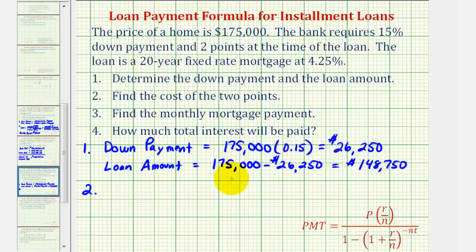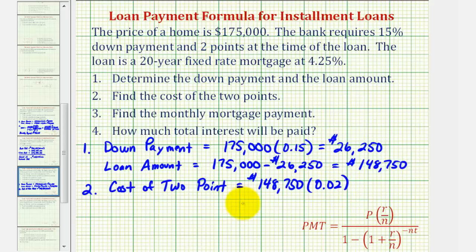So the cost of the two points will be 2 percent of the loan amount, or 2 percent of $148,750. So $148,750 times 2 percent expressed as a decimal, which would be 0.02, and this comes out to $2,975.